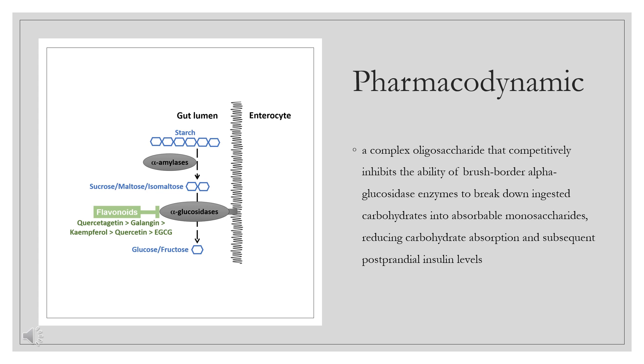There have been rare post-marketing reports of the development of pneumatosis cystoids intestinalis following treatment with alpha-glucosidase inhibitors. Patients experiencing significant diarrhea/constipation, mucus discharge, and or rectal bleeding should be investigated and, if pneumatosis cystoids intestinalis is suspected, should discontinue therapy.